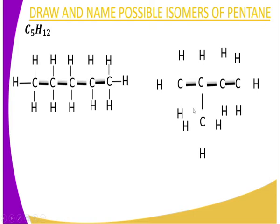If we substitute the open bonds of carbon by bonding them covalently to hydrogen, this gives us the same number of hydrogen atoms — twelve hydrogen atoms. So we have two different structures having the same molecular formula. Those are two isomers of pentane.